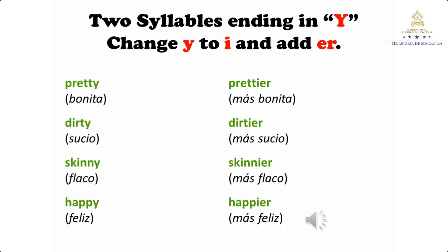Nuestro siguiente ejemplo: dirty, sucio. Dos sílabas y termina en 'y'. Cambiamos la 'y' por 'i' y agregamos 'er' — nos queda dirtier, más sucio. Skinny, delgado o flaco — con nuestra regla nos quedaría skinnier, más delgado. Happy, feliz — con nuestra regla nos quedaría happier, más feliz.